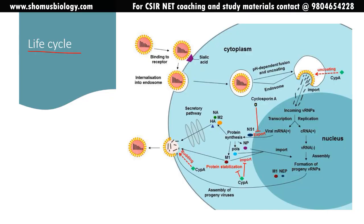Let's look at the life cycle of the influenza virus and how it replicates inside the host cell. The very first step is binding to a specific receptor on the host cell — sialic acid — with the help of the spike proteins hemagglutinin and neuraminidase.